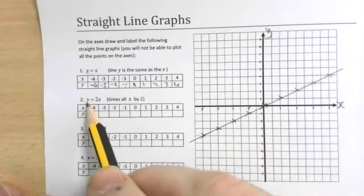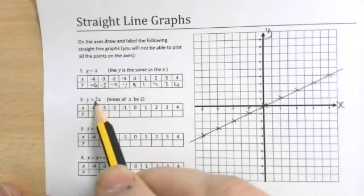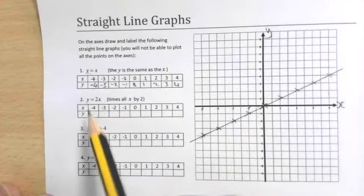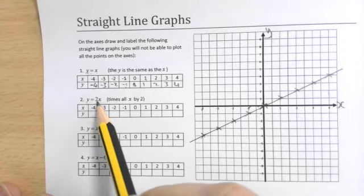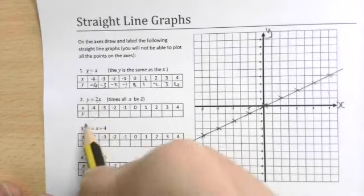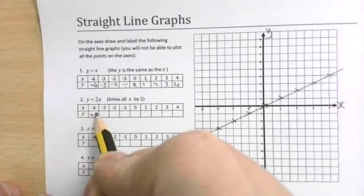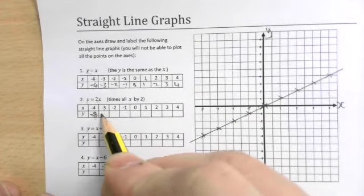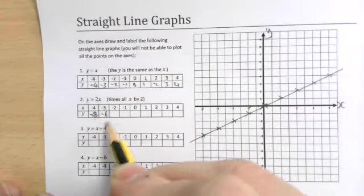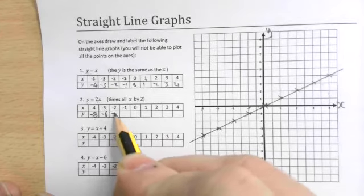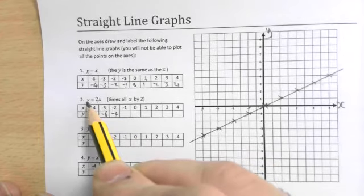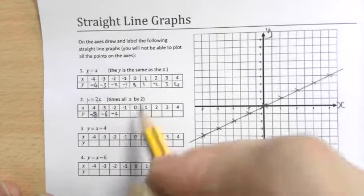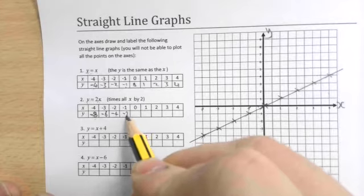This one says the y value is equal to two times the x value. So in the y box, I have to put two times whatever's in the x box. So that's minus four. So I need to double that. Times it by two. Two lots of minus four is minus eight. Two lots of minus three is minus six. Two lots of minus two. So again, I'm using this rule here. The y number, the number that goes in the y box is two times what goes in the x box.